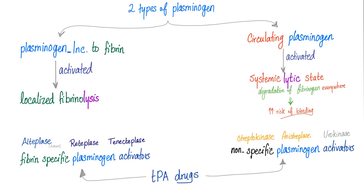Therefore, TPA drugs are divided into two classes: fibrin-specific plasminogen activators and non-fibrin-specific plasminogen activators. Fibrin-specific drugs only activate plasminogen incorporated into fibrin — localized plasminogen only. Non-specific drugs activate all circulating plasminogen everywhere. The fibrin-specific class has fewer side effects because they work locally. Which class is more expensive? The fibrin-specific — because there is a lower risk of bleeding via the systemic lytic state.